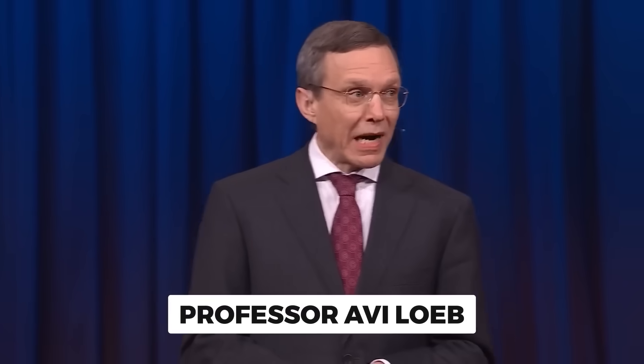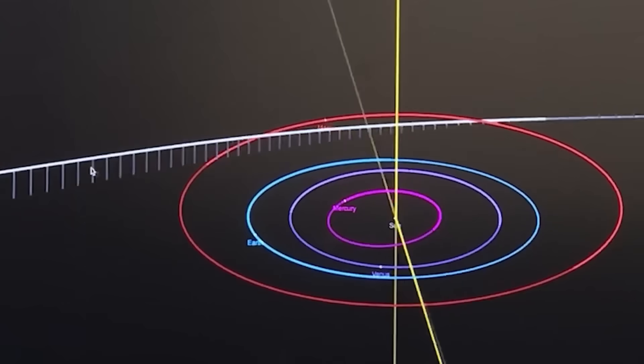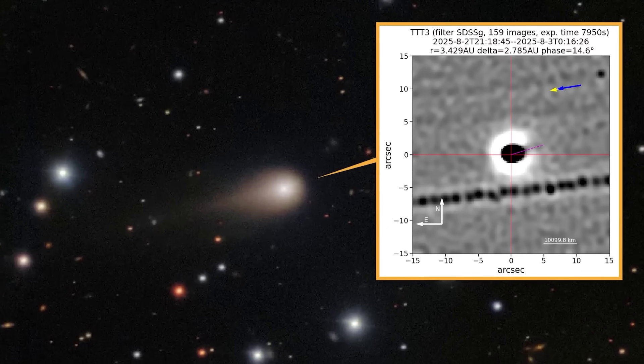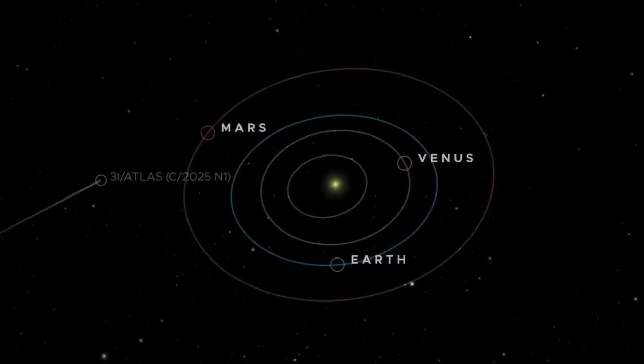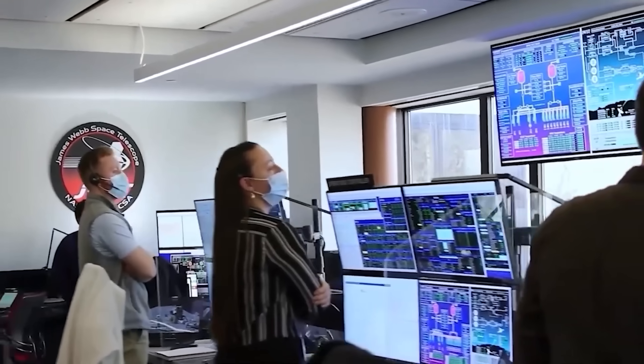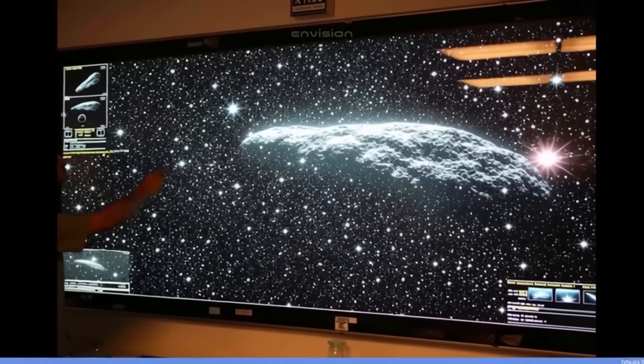Harvard astrophysicist Avi Loeb proposed a framework shift. What if interstellar messages don't arrive as electromagnetic signals or coded sequences, but as physical objects. Objects whose trajectories, timing, and anomalous properties constitute the message itself. If 3i Atlas represents such communication, its precision and behavior would be the syntax. Most people will miss what I'm about to reveal next, but if you're still here, you're about to understand why conventional explanations keep failing.